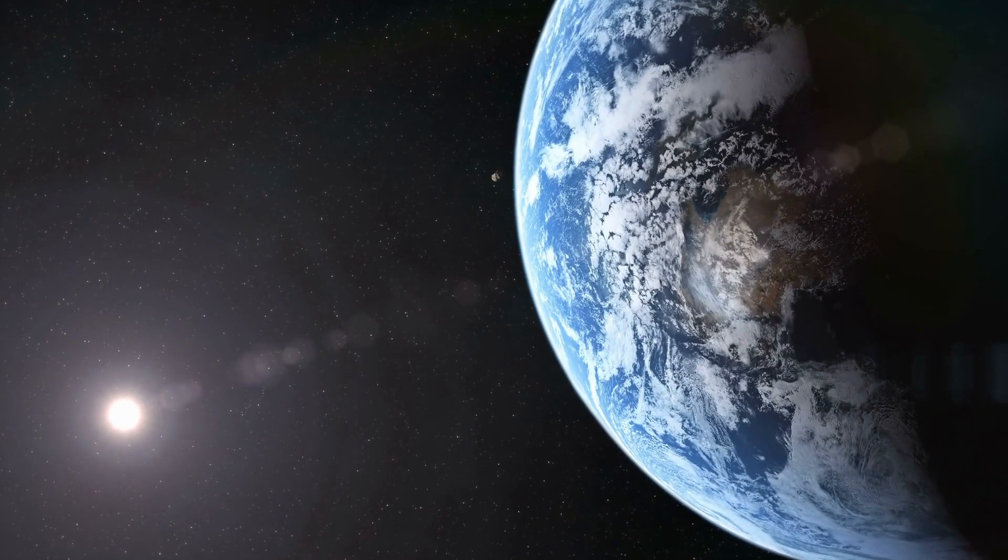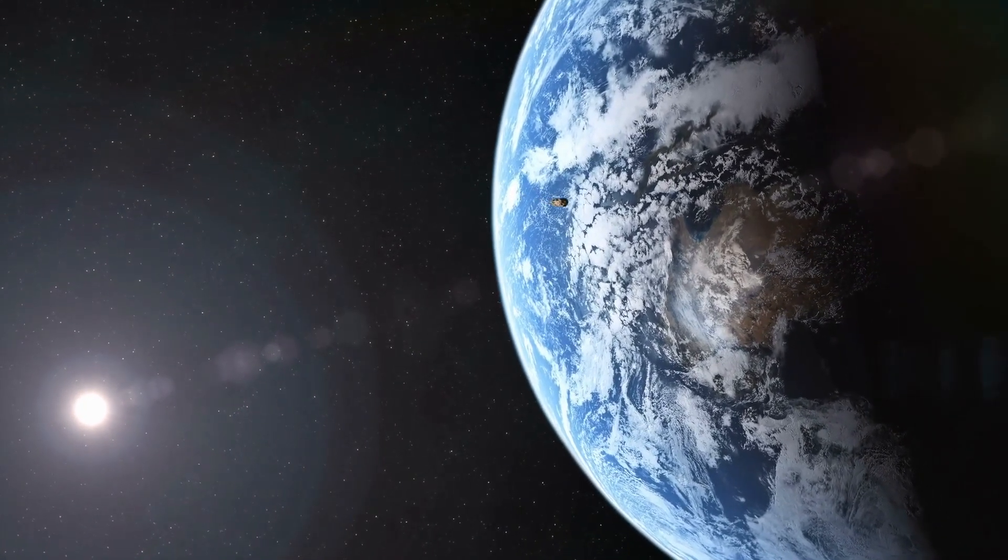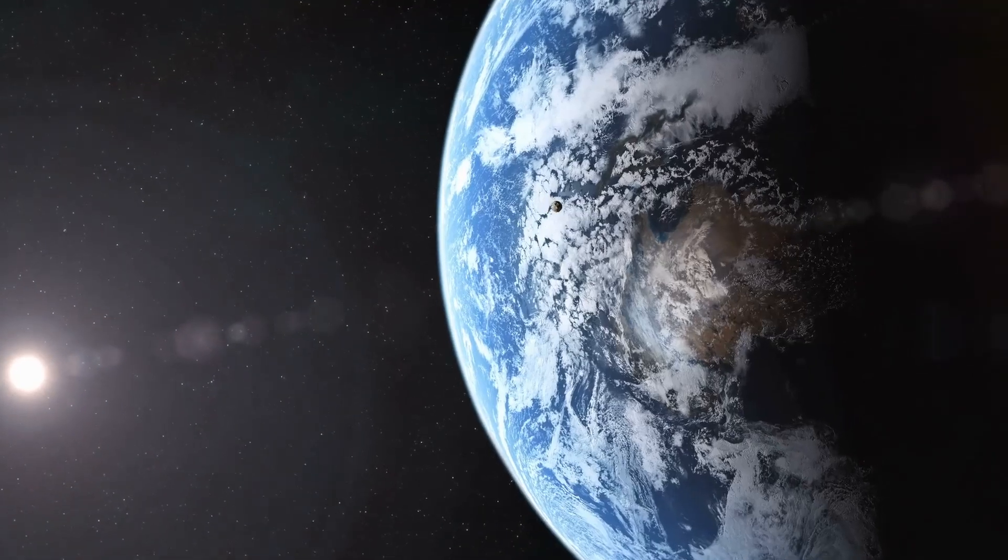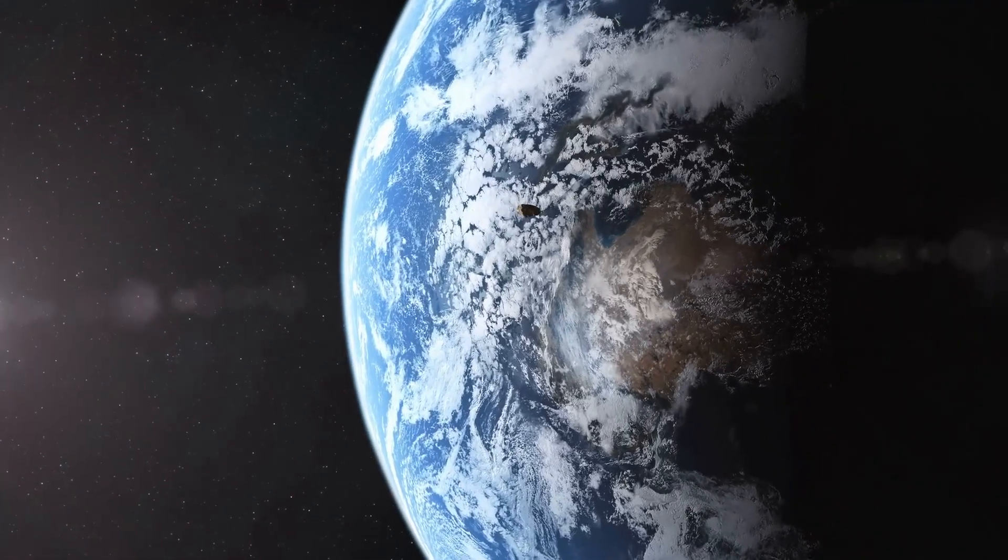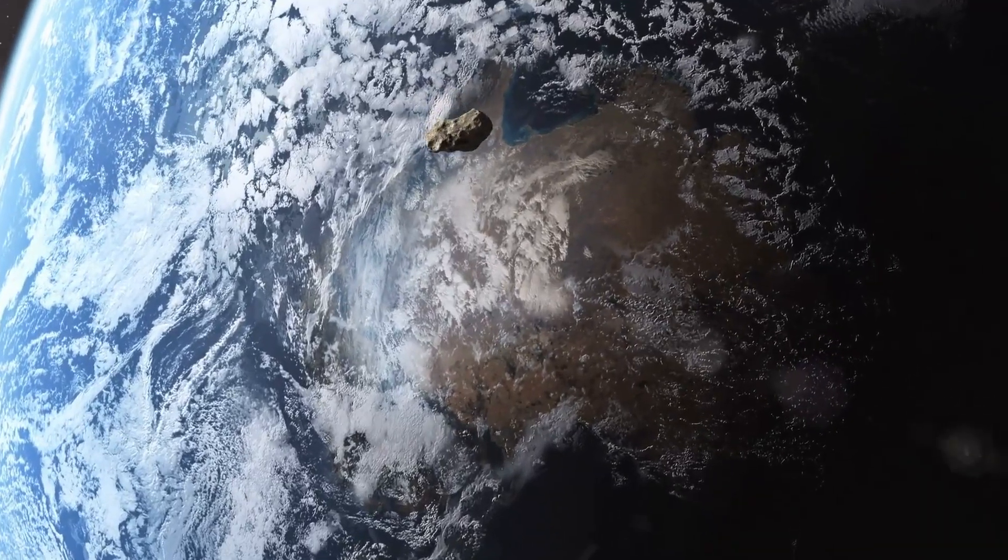Though the asteroid is hurtling past the Earth with a significant buffer space of 5.5 million kilometers, a slight deviation from its path, which can be caused by many factors, can make it change its course and collide with the planet within seconds.